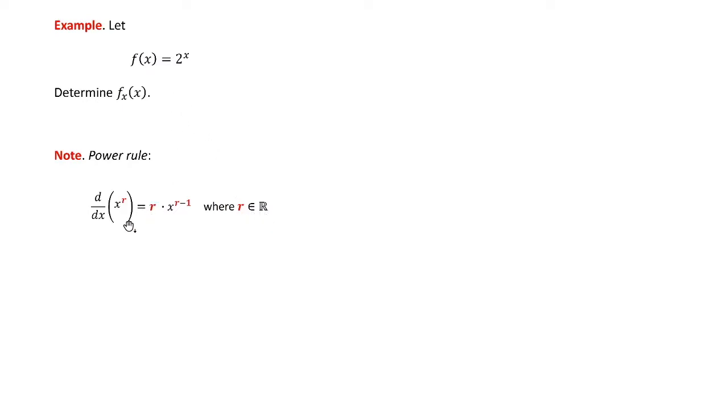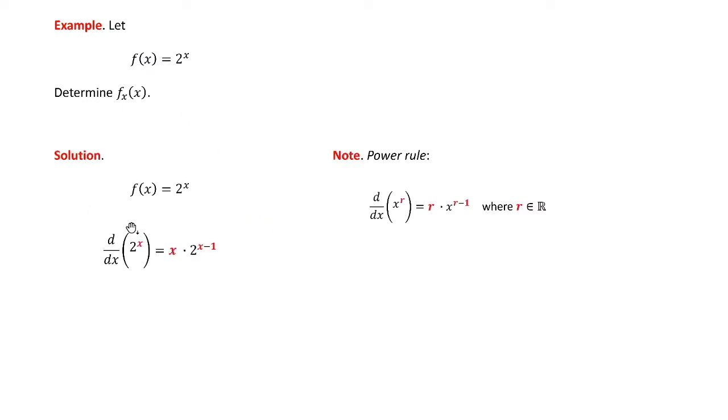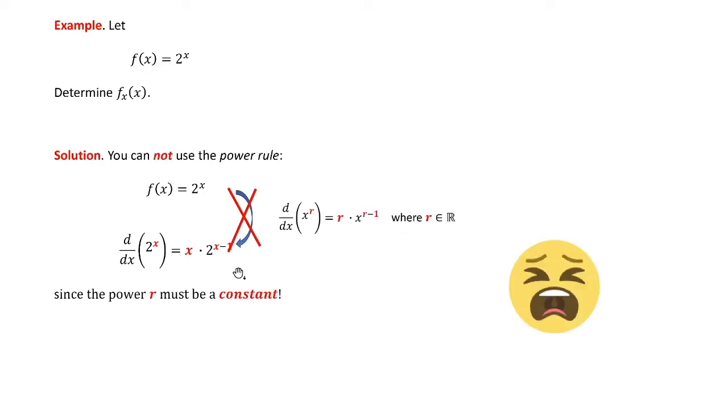The base here has the variable x and the power has to be a constant. If you apply this rule, which is the most common mistake I see on exams, people will do this blindly. This rule does not apply. The power has to be a constant and the base has the variable. This is just not knowing the rules and applying it naively.